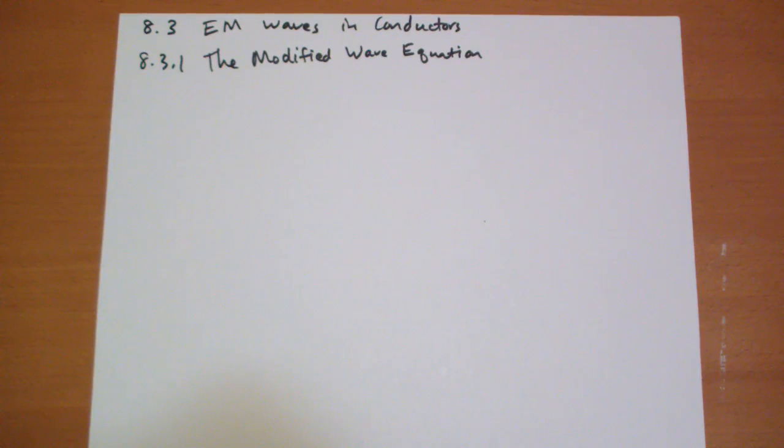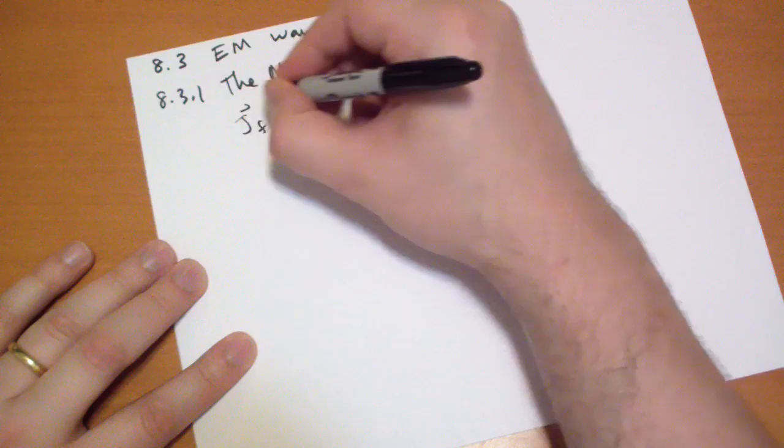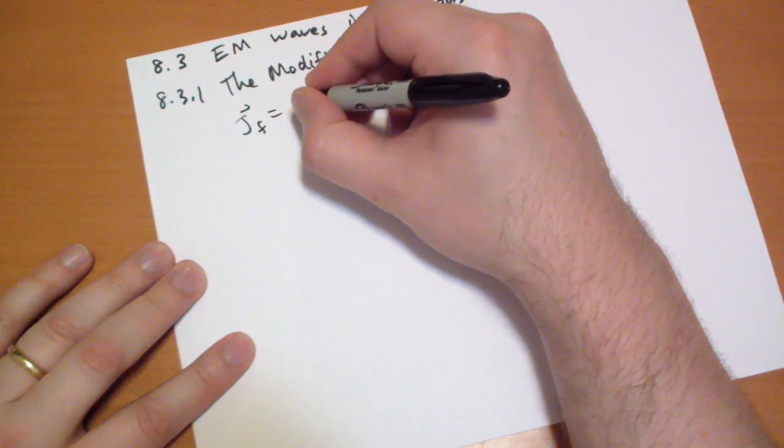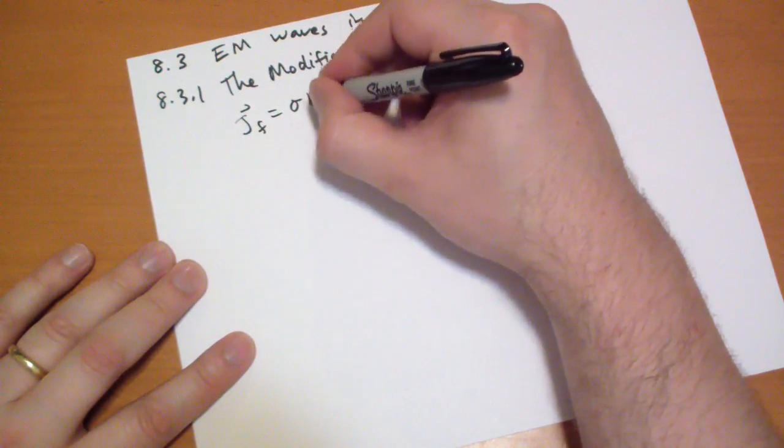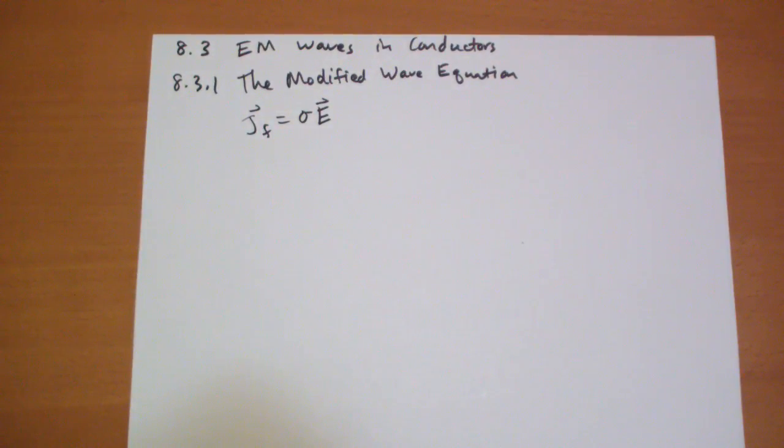Now we're going to have our EM waves traveling in a conductor and the difference between a conductor and an insulator is that the conductor has a current, the free current, which is equal to the conductivity times the electric field.